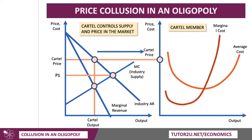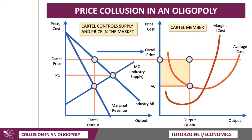Each firm in the cartel then has to accept the cartel price — they become a price taker, so that becomes effectively their demand curve. Note that the scale on the x-axis of the right-hand diagram is not the same as on the left. Within the cartel, each supplier will be set a quota — remember the Canadian maple syrup example — so they have to produce a given output to allow the cartel to control supply. The average cost of supply for that quantity is shown, giving the profit that the individual cartel member might make. Cartels aim to maximise profits for members as a whole by setting a high price and imposing output quotas on individual firms.